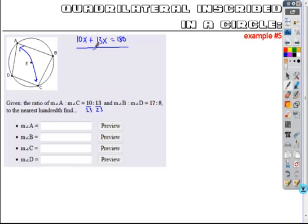So what I would do is I would say angle A is 10 out of 23 parts of the whole, and angle C is 13 out of 23 of those parts. And what's the total sum of parts? Opposite angles are supplementary, so 180.